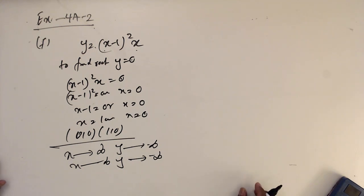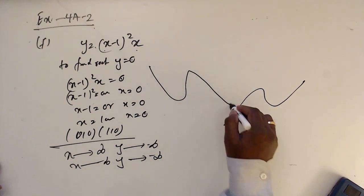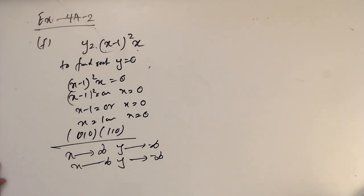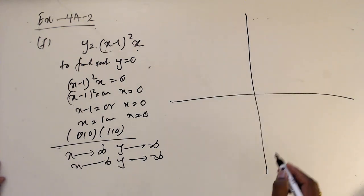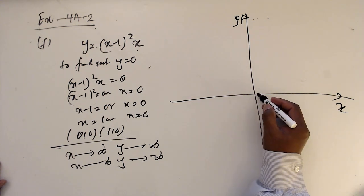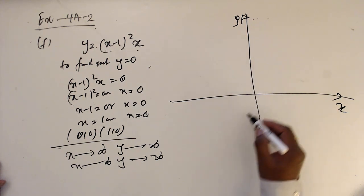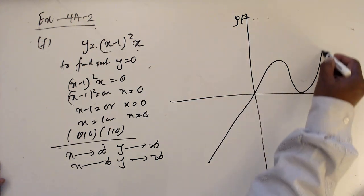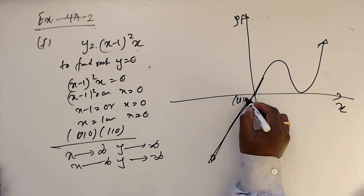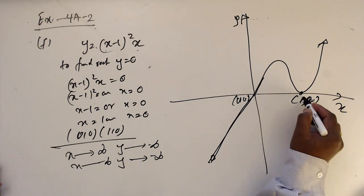So far we are doing graphs with either this shape or this shape — that's all. For this problem, x going to positive infinity means y goes to positive infinity, x going to negative infinity means y goes to negative infinity. The root at 0 is simple and 1 is a repeated root.